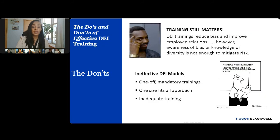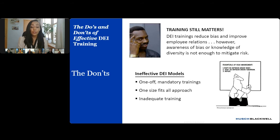DE&I trainings can be effective for reducing individual biases, but the research demonstrates that certain models are simply ineffective and worse, counterproductive. Mandatory trainings can cause pushback and lack of engagement — at least one study found that organizations that implemented mandatory diversity trainings had fewer diverse employees in management after five years. The one-size-fits-all approach is also ineffective; training should reflect the nuances of a particular company and industry to have maximum impact. Inadequate training — including infrequent trainings, unqualified trainers, or trainings that alienate or target employees — is also ineffective. In order to have maximum impact and mitigate risk, training needs to be tailored to an organization's needs and backed by policies and accountability measures.